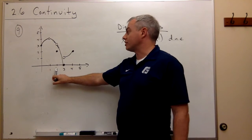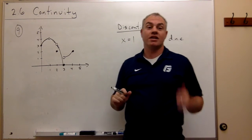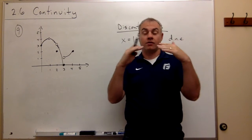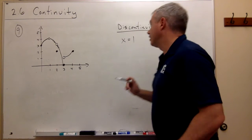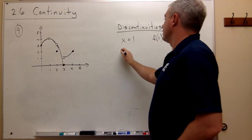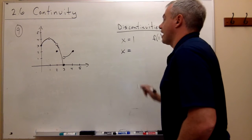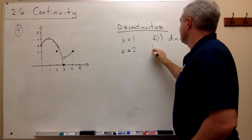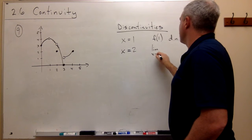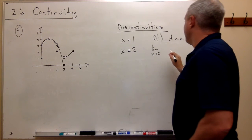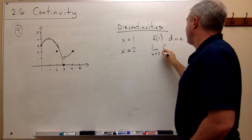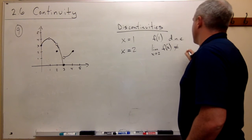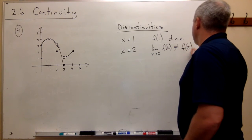The functional value is two and the limit value is three. The third question: are those the same value? No, they're not. So it is not continuous at x equals two. Another discontinuity on this graph is at x equals two because the limit as x goes to two of f(x) is not the same as f(2), and they need to be the same for continuity.